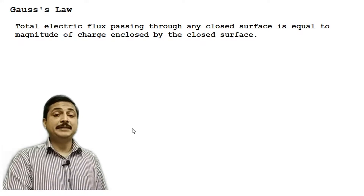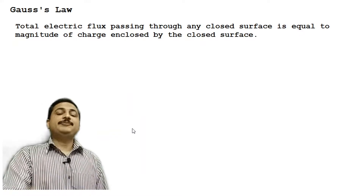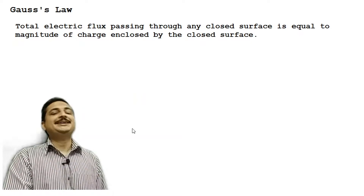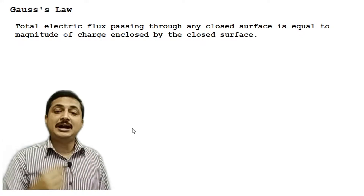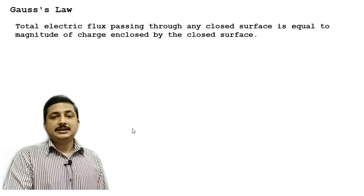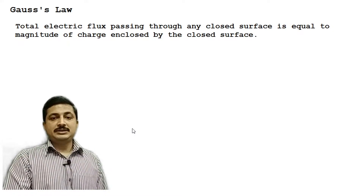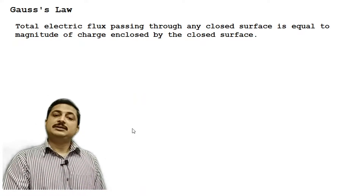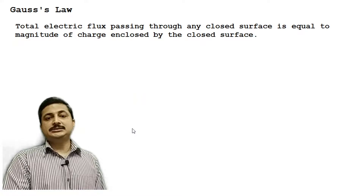What does it really mean? What Gauss tried to explain is that if there is a closed surface, irrespective of the shape — it can be a circular closed surface, a rectangular closed surface, or any arbitrary closed surface — the total flux coming out of this closed surface will be exactly equal to the magnitude of charge present inside this closed surface.